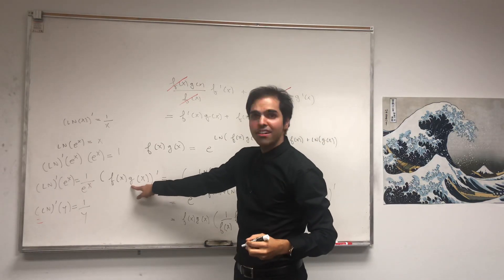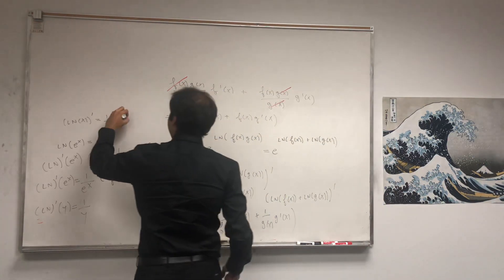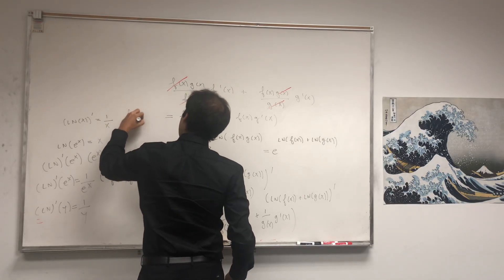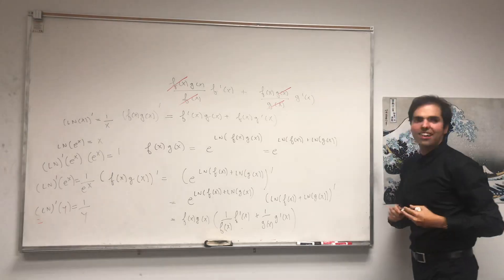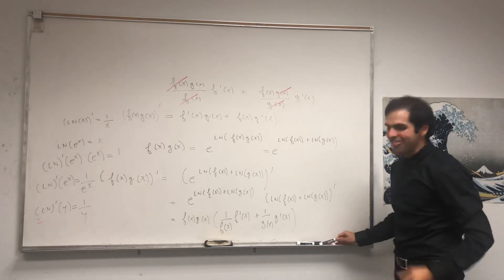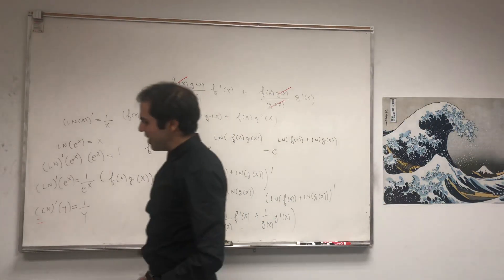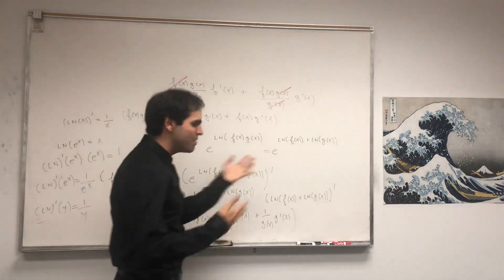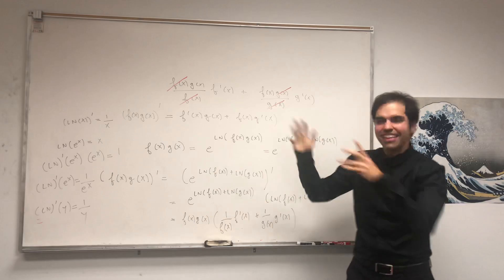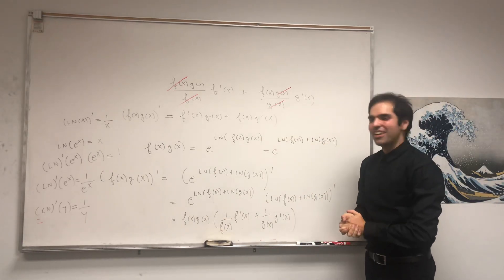What did we try to calculate? f times g prime of x, which is a proof of the product rule using purely the chain rule. How cool is that? I don't quite remember the proof of the chain rule, but there might be circular reasoning, but at least I think this is awesome enough.